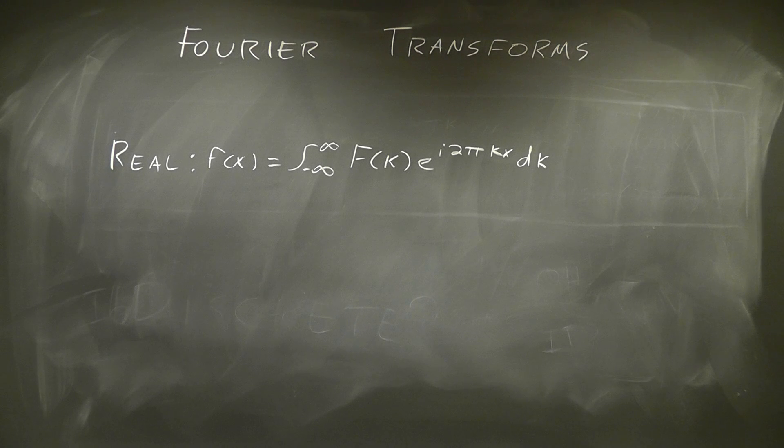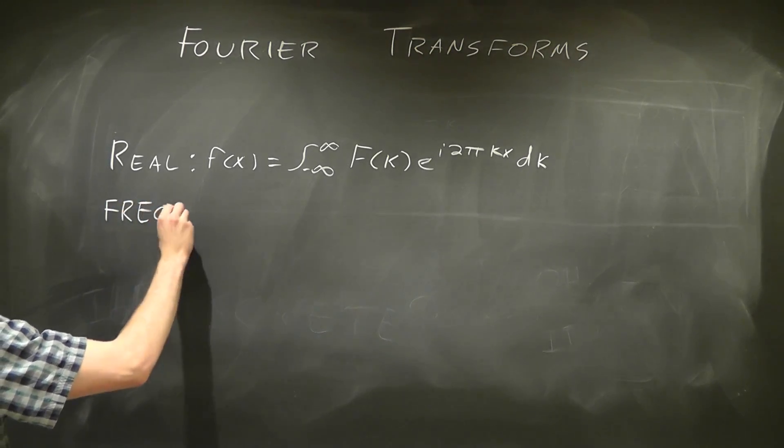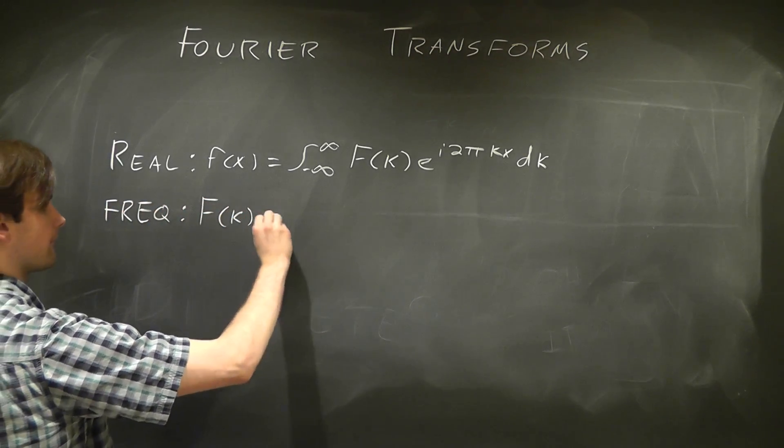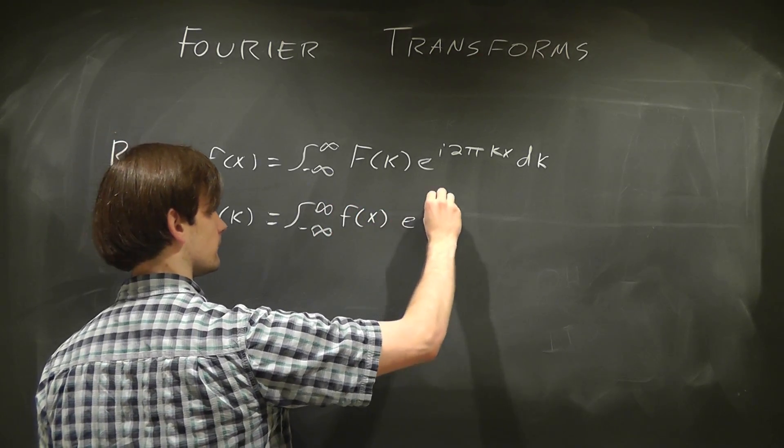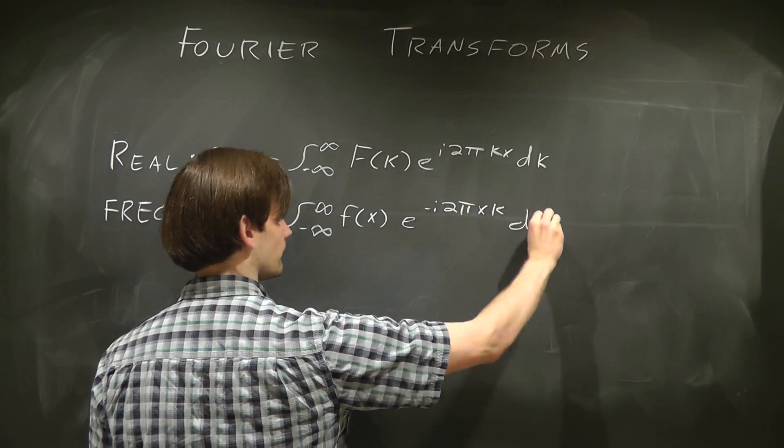Now for the forward Fourier transform, the one that allows us to flip from real space to frequency space. Some function in frequency space is equal to the integral over all real space of some function in real space times e to the negative 2πixk.